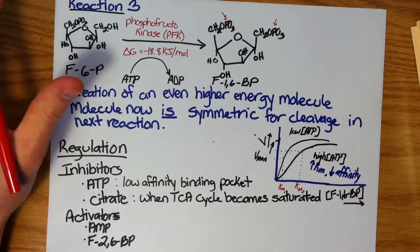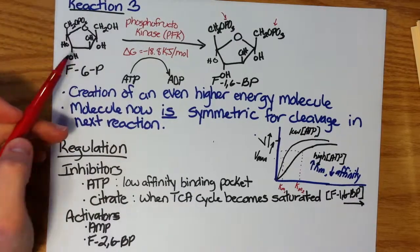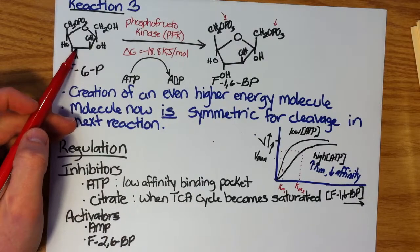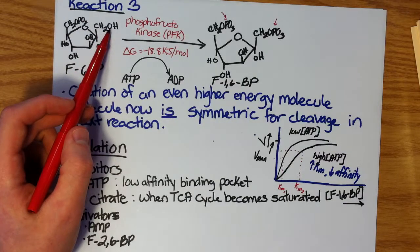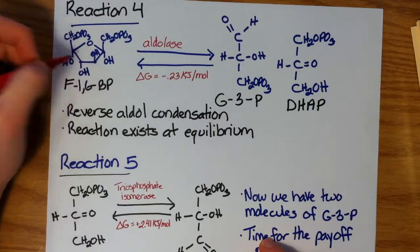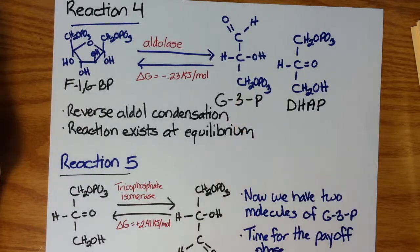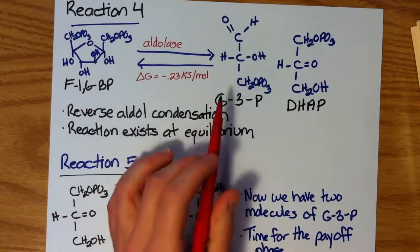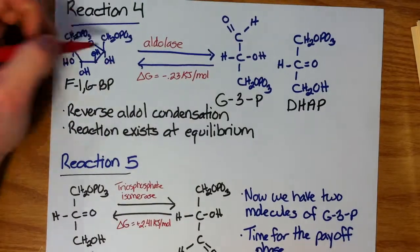Let's recap real fast. We went from glucose. We phosphorylated the carbon-6 to make glucose-6-phosphate. We isomerized the aldose sugar into a ketose sugar to help make the molecule more symmetric and to allow for the hydroxyl group off of carbon-1 to be attacked more easily. And now we phosphorylate that carbon. The fourth reaction involves the cleavage, as I've been alluding to, between carbon-3 and carbon-4. Now that we have our symmetric molecule, we can make two similar molecules. That is the conversion of fructose-1,6-bisphosphate to glyceraldehyde-3-phosphate and dihydroxyacetone phosphate, G3P and DHAP, by the enzyme aldolase.